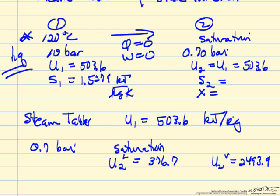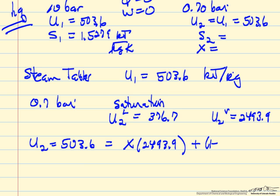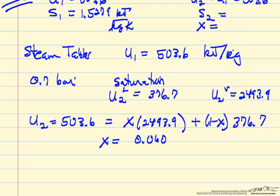We can calculate that because we know the internal energy. So the internal energy U2, 503.6, is going to be equal to some fraction, that is vapor, times the internal energy for the vapor. The remaining fraction, the larger fraction is liquid, times its internal energy per kilogram. These are kilojoules per kilogram in each case. So we can just do the algebra to determine x, which is 0.06. So the quality is only 6% vapor, it is mostly liquid in this system.